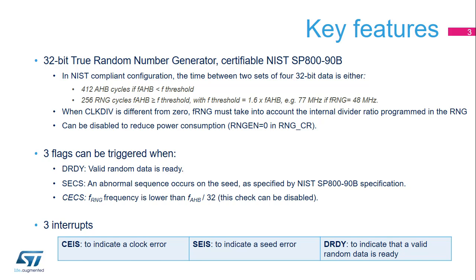The RNG peripheral is based on continuous analog noise that provides a random 32-bit value. It is certifiable NIST SP890B with a guaranteed entropy of 128 bits. When configured to pass NIST SP890B certification,